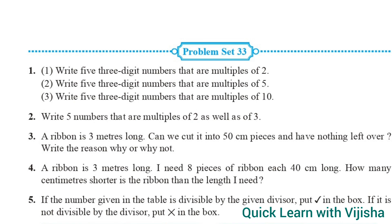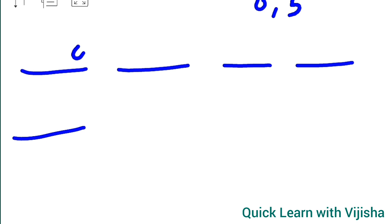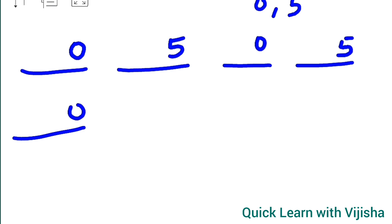Write 5 three-digit numbers that are multiples of 5. We need to write 5 numbers, each with 3 digits. Multiples of 5 means the units place should be 0 or 5. So I will use units digits alternating: 0 and 5.